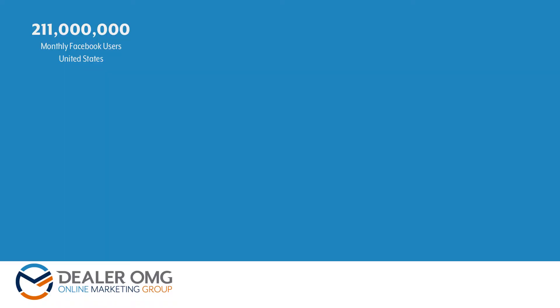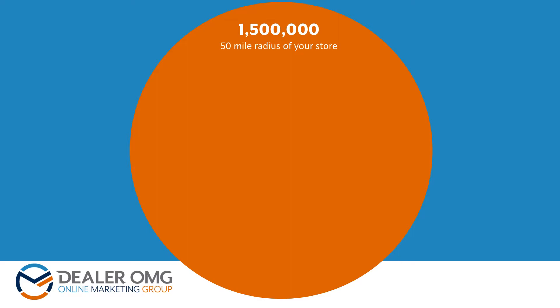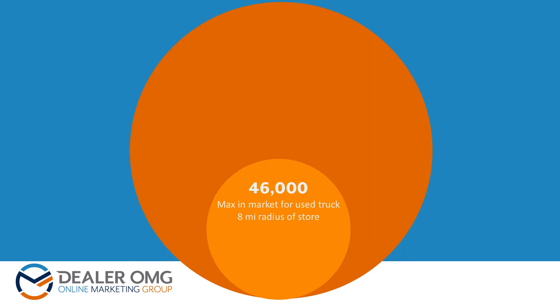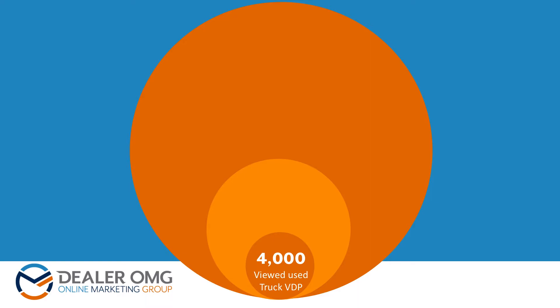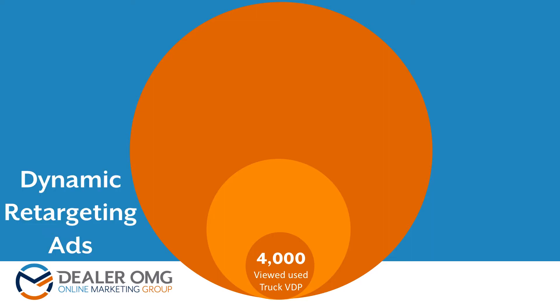For an example of how to create an audience and what it looks like: we've got 211 million monthly active users on Facebook in the United States that we can target. Let's narrow that down to make it more cost-effective. This is an example of a store in Austin, Texas — we've got 1.5 million people in a 50-mile radius. Let's narrow that down to the 46,000 people who are in market for a used truck within an 8-mile radius. We can connect with them using dynamic prospecting ads, and narrow further to the 4,000 hypothetical people who've come by your website and looked at a truck — and then get them with the retargeting version of those ads.